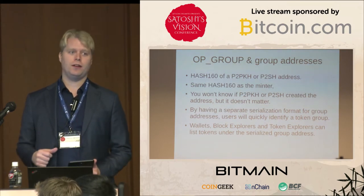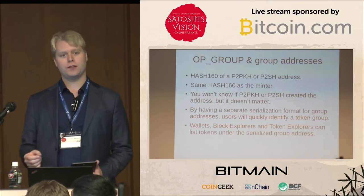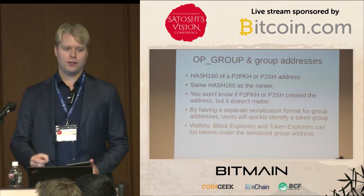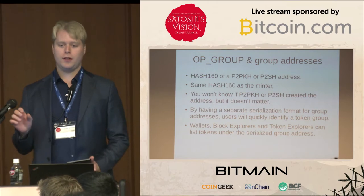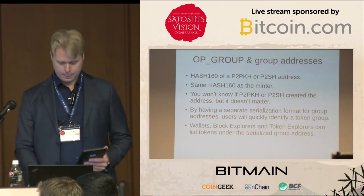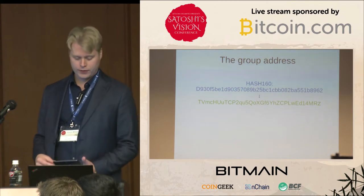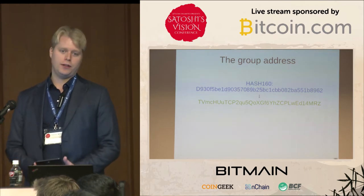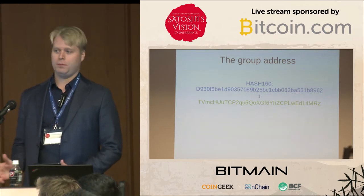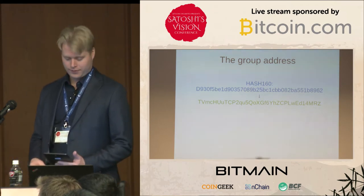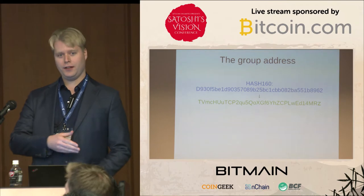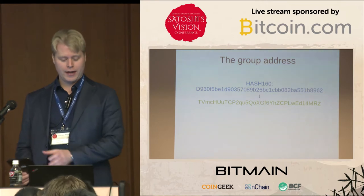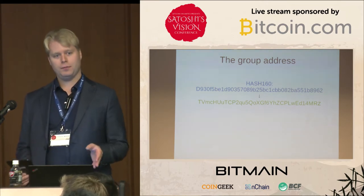By giving each token group its own address format, the user can very quickly identify that this is a token. In this example I'm using the legacy format because it's shorter and makes it easier for a presentation. Since the address starts with a T, you know immediately this is a token group. Any balance in this T-address means that it is a token.